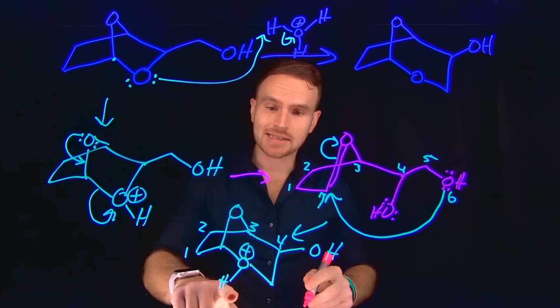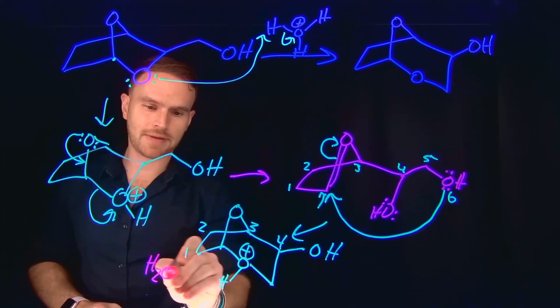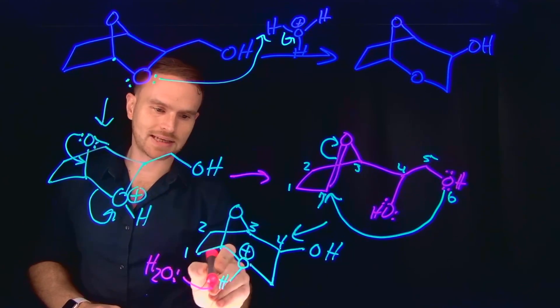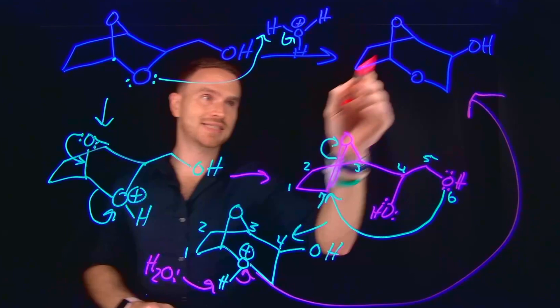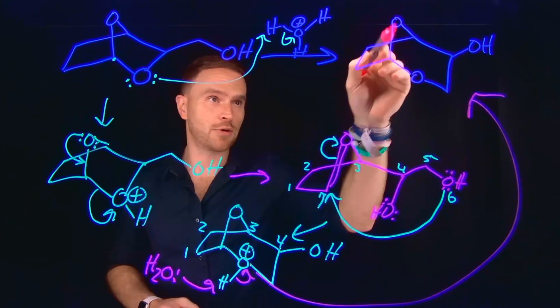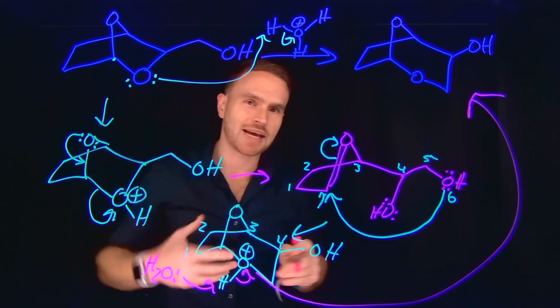So now all that remains is to deprotonate this, and remember we generated water in the very first step, and that water molecule can come and deprotonate this to give us our final product, which is that seven-membered fused ring with another five-membered ring, where we have kind of migrated the location of that CH2.